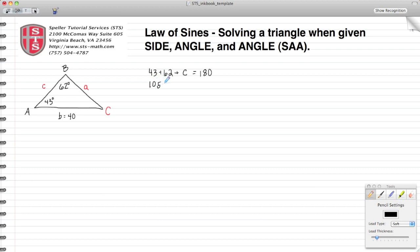43 and 62 is 105, and using the rules of algebra we see that C comes out to be 75 degrees. So that there is one of our solutions.